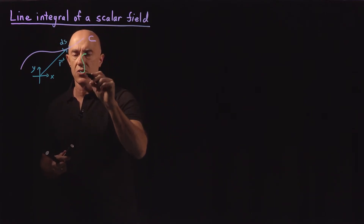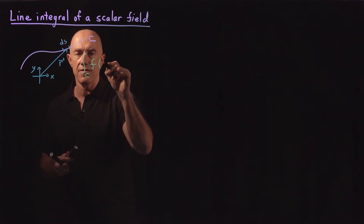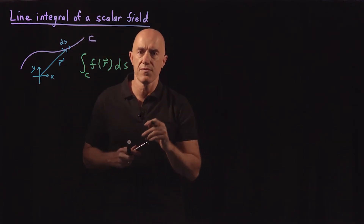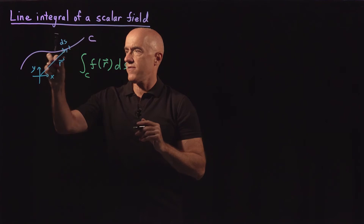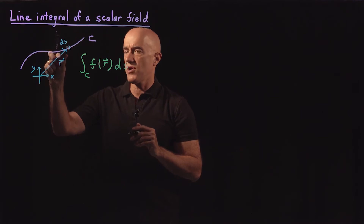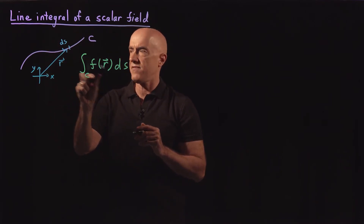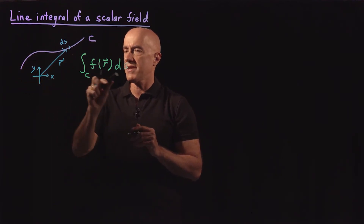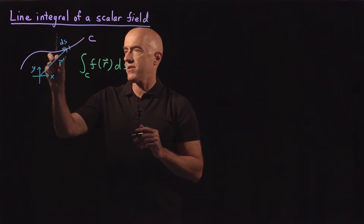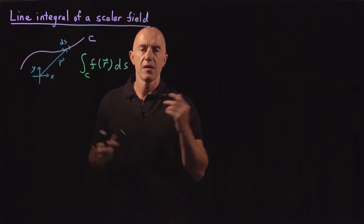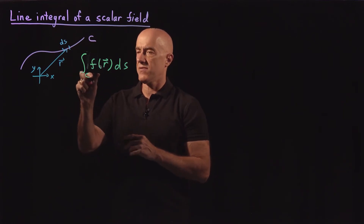We write the integral along the curve of some function f of r, ds. What that means in terms of the Riemann sum is that we broke this curve up into small elements of length ds. Everywhere on the curve we have some value of the function f of r. We take the average in these small elements and sum up all the values of f times the lengths ds over the whole curve C. That's the Riemann sum definition of the line integral.